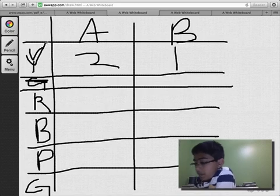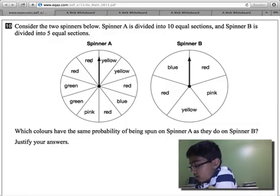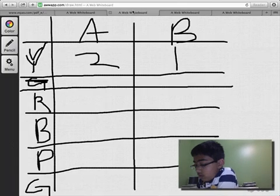Let's go to red. Now red has four reds in spinner A and two in spinner B. Let's go back to our writing board.